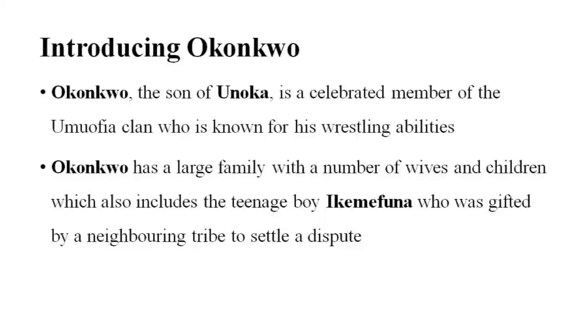I have divided the points into three main thematic groups. The first one, as the title of this slide tells you, is about introducing the character Okonkwo. Okonkwo is the protagonist of Achebe's novel and he is a celebrated member of the Umuofia clan. The whole plot is an unfolding of the life and career of this central character. I have listed a few points under this thematic heading, and we will come to each of them later.